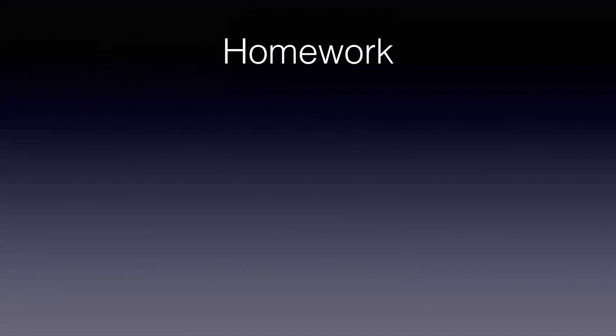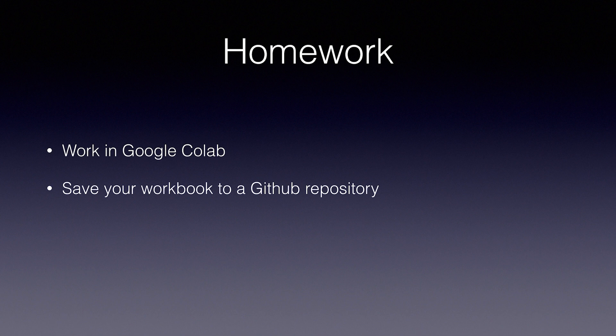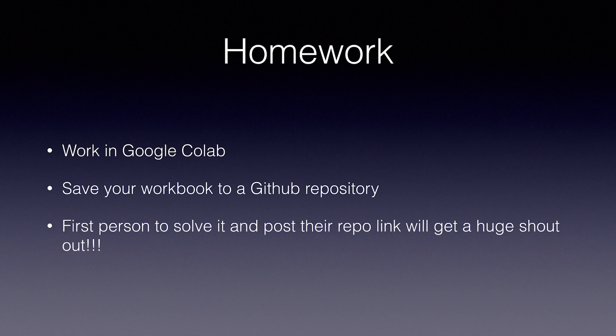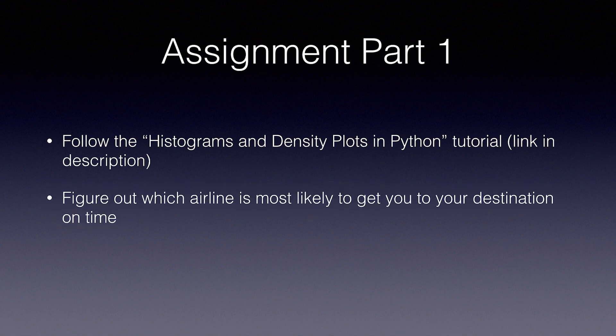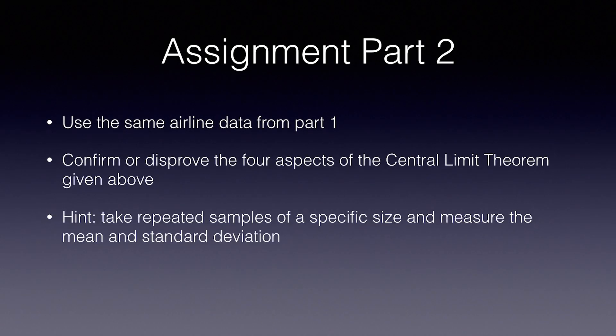Alright, it's time for your homework assignment — this one comes in two parts. Post your answers in the comments inside the lesson labeled homework assignment. I highly recommend using Google Colab and saving your workbook to a GitHub repository. The first person to solve the whole thing gets a huge shout-out. Part 1: Follow the histograms and density plots in Python tutorial linked below to figure out which airline is most likely to get you to your destination on time — tell us which airline you chose and why. Part 2: Use the same airline data to demonstrate or disprove the four aspects of the Central Limit Theorem. Take repeated random samples of a specific size, measure the mean and standard deviation of each, graph your results, and assess whether it looks like a normal distribution and how sample size affects your results.